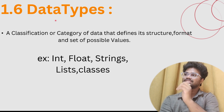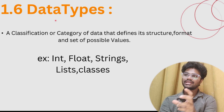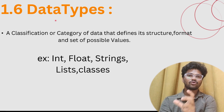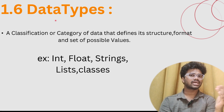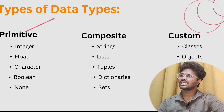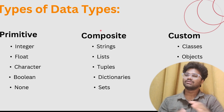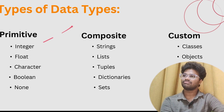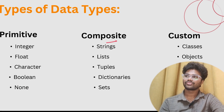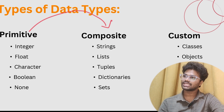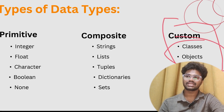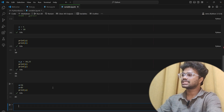Data types in Python: the classification or category of data that defines its structure, format, and set of possible values. Examples include whole numbers (integers), decimal numbers (float), characters A to Z, strings, and lists. Types of data types: primitive data types — the basic types: integer, float, character, boolean (true or false), and none (empty). Composite data types — derived from primitives: strings, lists, tuples, dictionaries, and sets. Custom types use classes and objects — the OOPs concept.